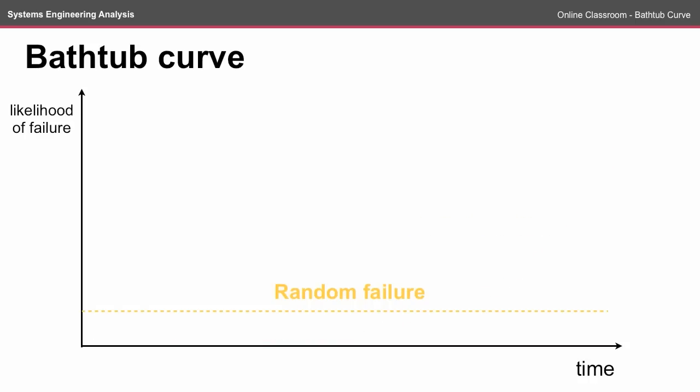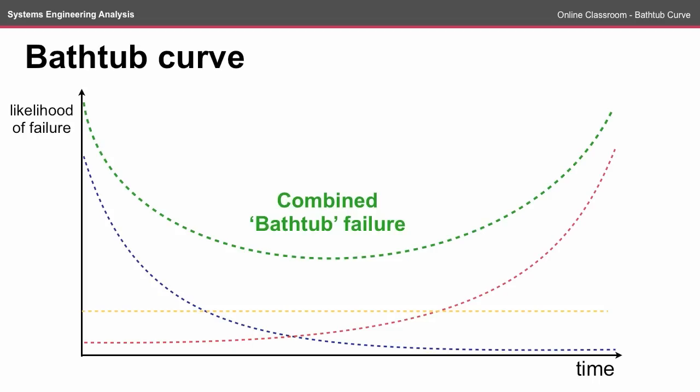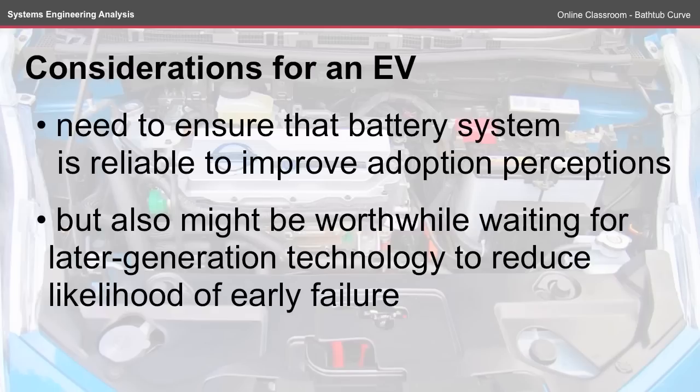The final mode of failure is random failure — these are things that could happen at any time without notice. For each of these modes of failure you're hoping that the amplitude is as low as possible, because when these types of failure combine you end up with the likelihood of failure in the shape of a bathtub over the product's life cycle.